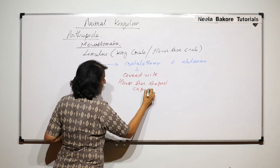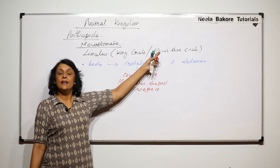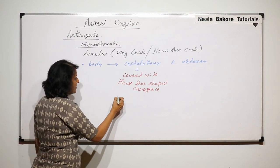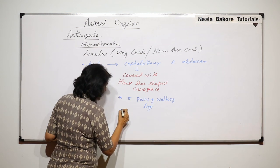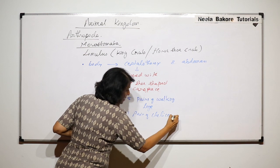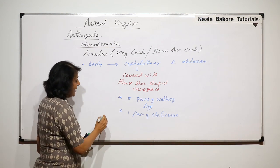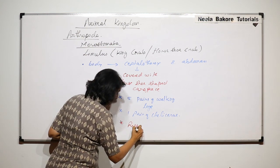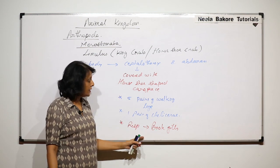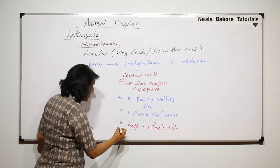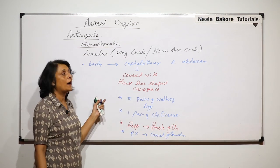The carapace covering the cephalothorax is horseshoe-shaped, which is why the animal gets its common name. In the cephalothorax region there are five pairs of walking legs and one pair of chelicerae, which help in capturing food — similar to what arachnids have. For respiration, Limulus has book gills; unlike arachnids where the structure is called book lungs, here it is called book gill. For excretion they also have coxal glands.